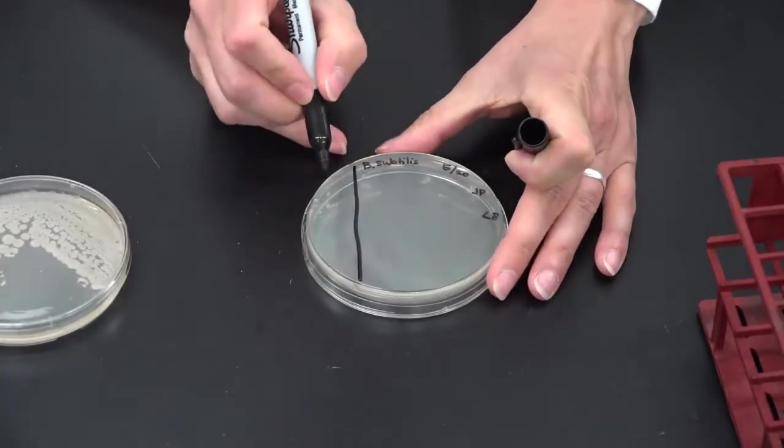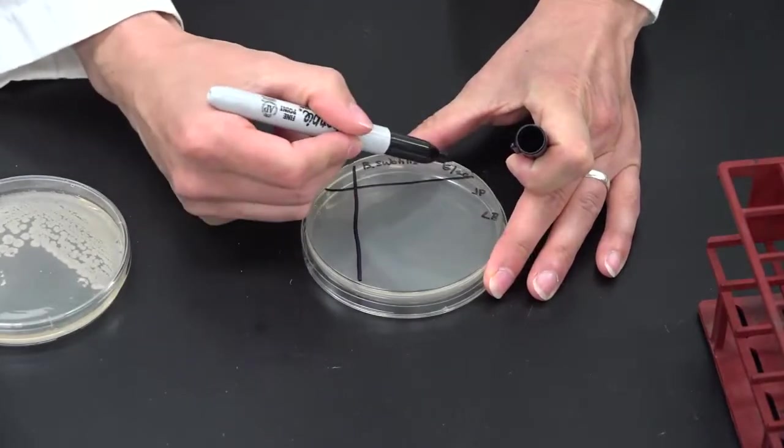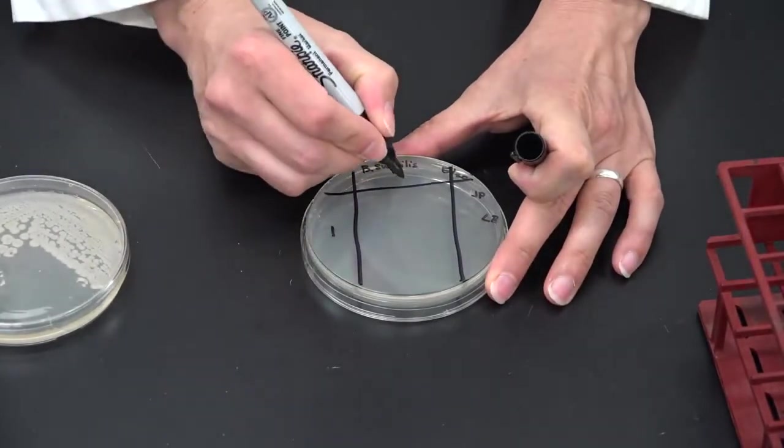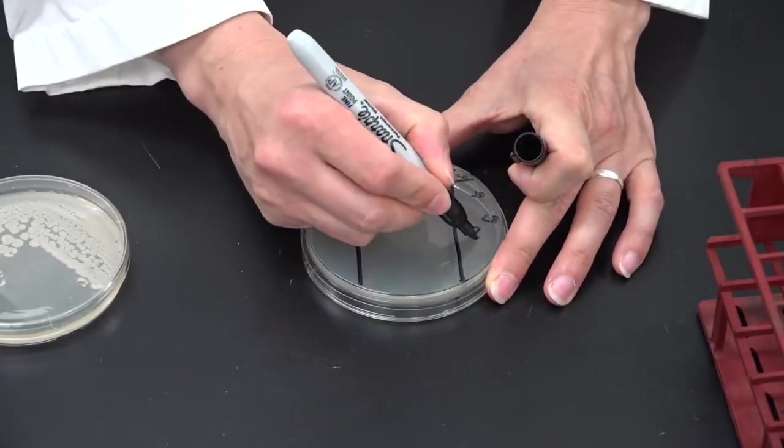On the back of the plate, take a marker and draw three lines and then label the quadrants as one, two, three, and four.